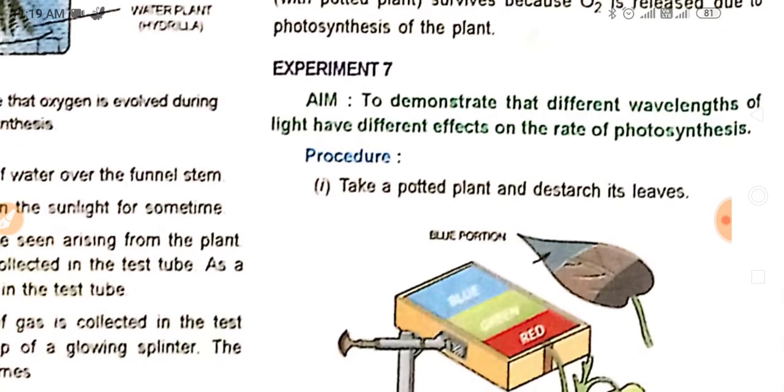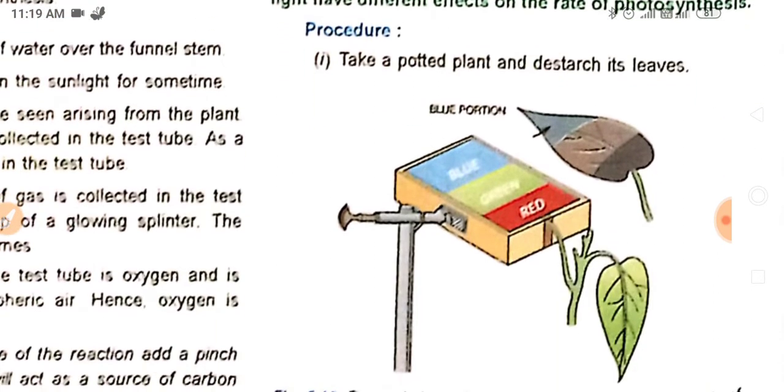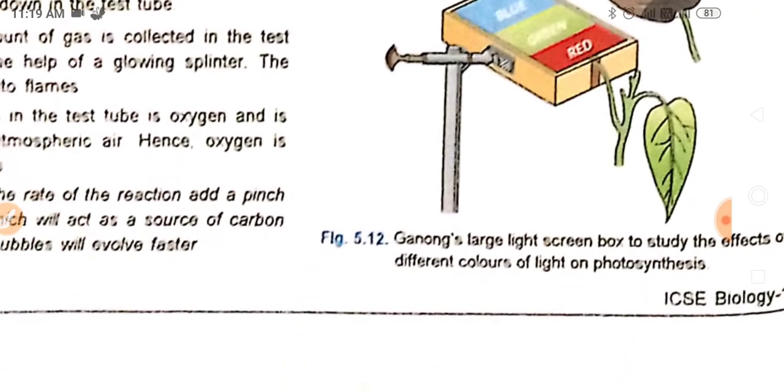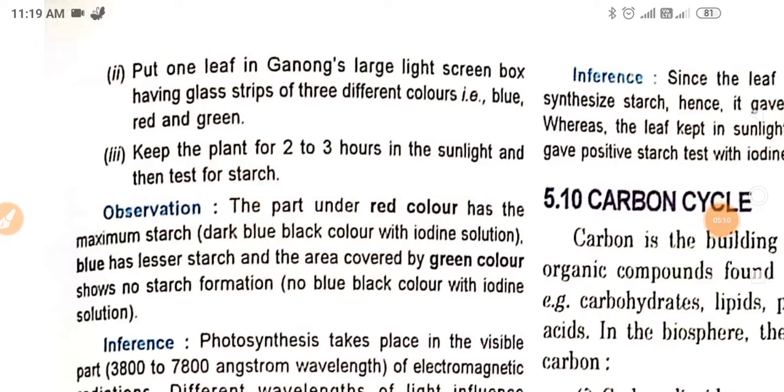Next is to demonstrate that different wavelengths of light have different effects on the rate of photosynthesis. For this experiment, you have to take a potted plant and destarch its leaves by just putting it inside in a room for two to three days. Then put one leaf in Ganong's photometer large light screen box having glass strips of three different colors—blue, red, and green. This is Ganong's large light screen box, as he made a photometer also.